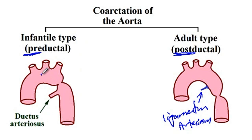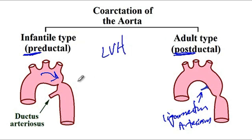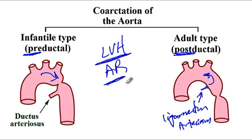Because of the coarctation, there is a problem with blood flow, as a consequence of which the left ventricle will have to work harder and will undergo hypertrophy. So both types of coarctation are associated with left ventricular hypertrophy. In addition, due to the blockage of the aorta from the coarctation, there will be aortic regurgitation in both types. Aortic regurgitation and left ventricular hypertrophy are the two features seen with coarctation of the aorta.